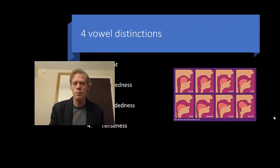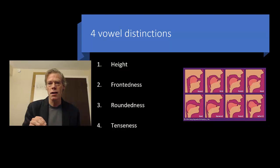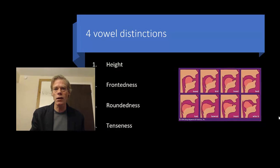IPA vowels. Just as we did with consonants where we had three distinctions, with vowels we're going to have four distinctions: height, frontedness, roundedness, and tenseness. And those are going to be used to differentiate all of the vowels of all of the languages.